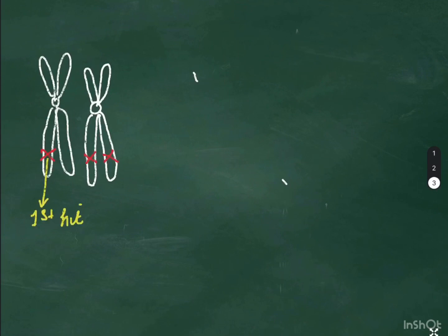So you can see here, first hit which is a germline mutation, the second hit which is a somatic mutation which is after birth.